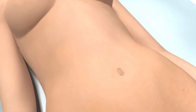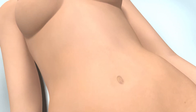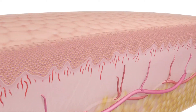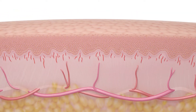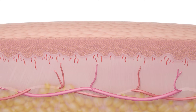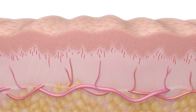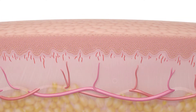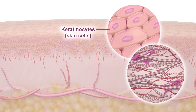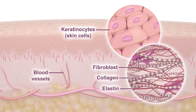Skin in its natural state is always under functional tension. Its viscoelastic properties allow it to react dynamically to movement and pressure. Microscopically, skin is a dynamic system including keratinocytes, fibroblasts, structural components including collagen and elastin, and blood vessels.